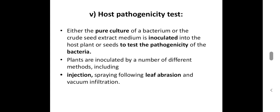In the injection method, the pure culture is taken and injected into the leaf. In case of leaf abrasion, with the help of carborundum powder, a wound is created and then spraying of the particular culture is done.